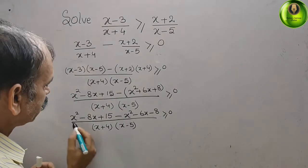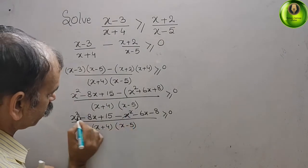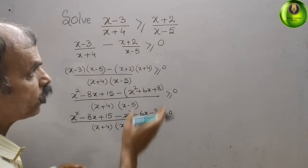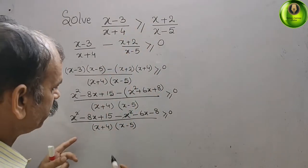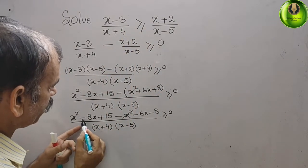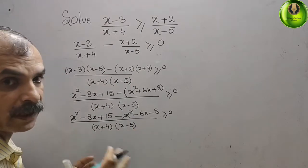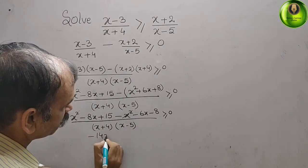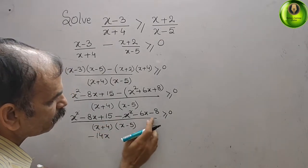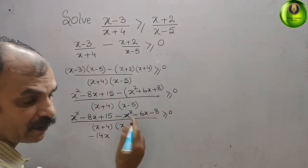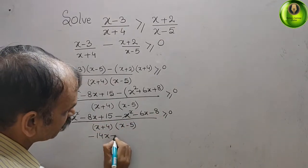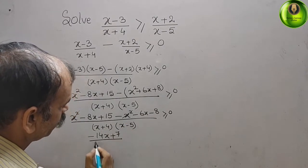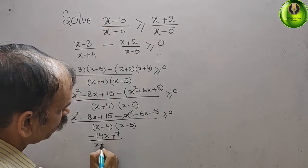You can see x squared minus x squared cancels. Now the new equation: minus 8x minus 6x gives minus 14x, and 15 minus 8 gives plus 7. So we have minus 14x plus 7, by (x plus 4).